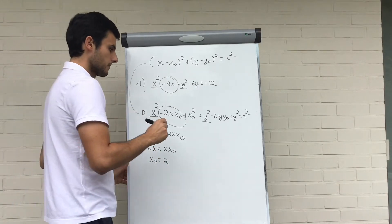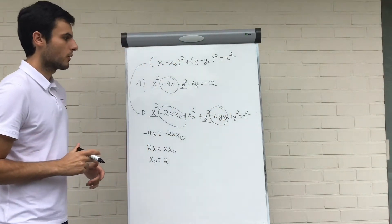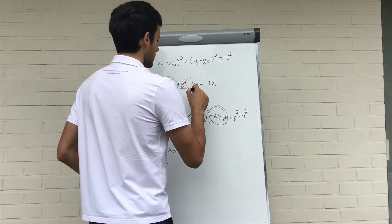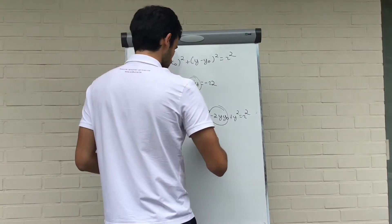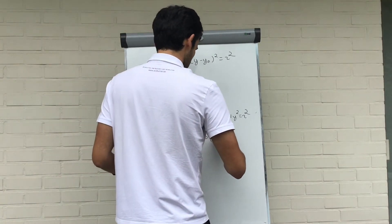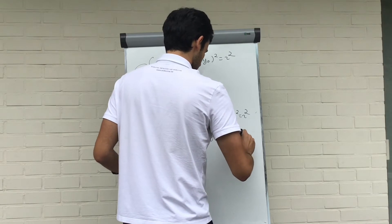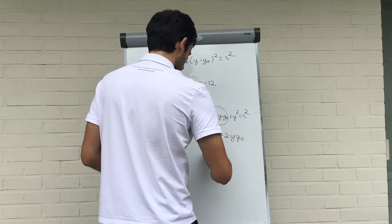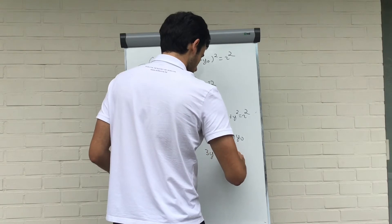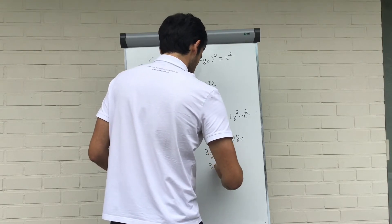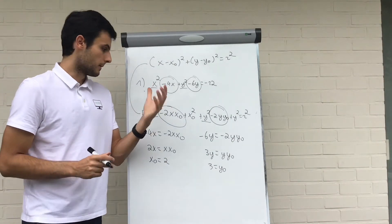For the second coordinate, same principle. We get minus 6y, which is equal to minus 2y·y₀. Divide by minus 2, we get 3y equals y·y₀, or y₀ equals 3. So we have the center: it's (2, 3).